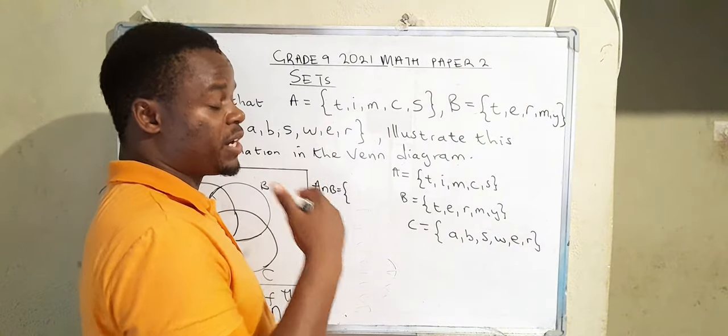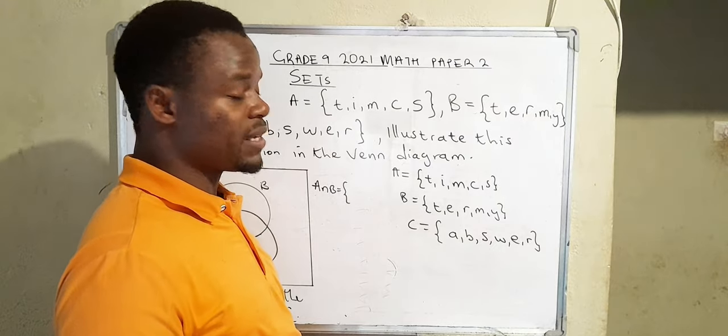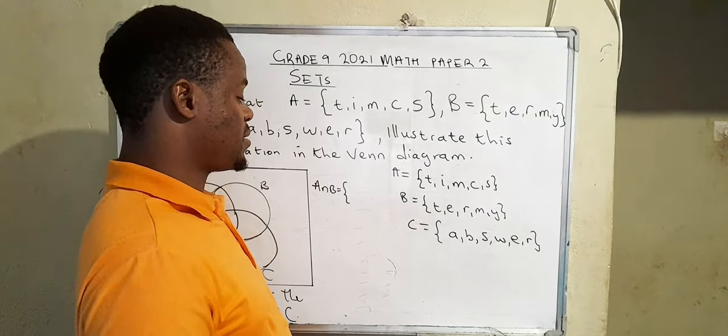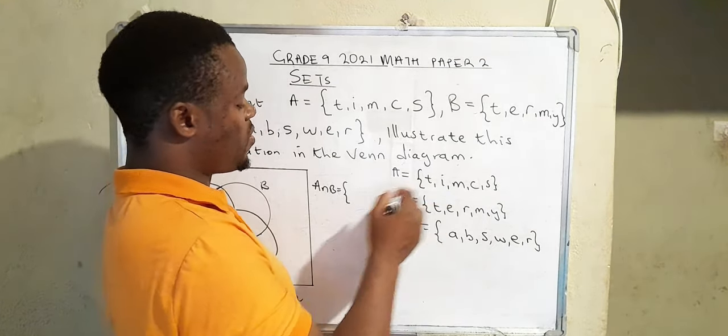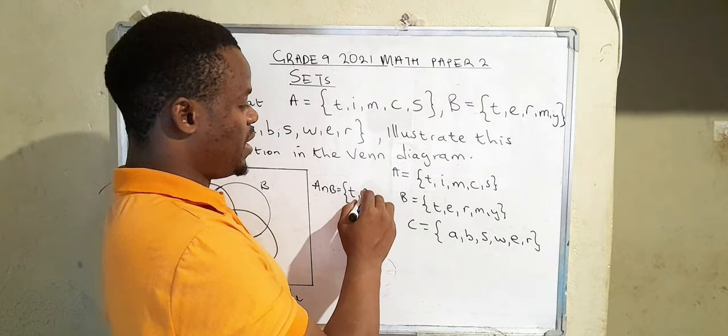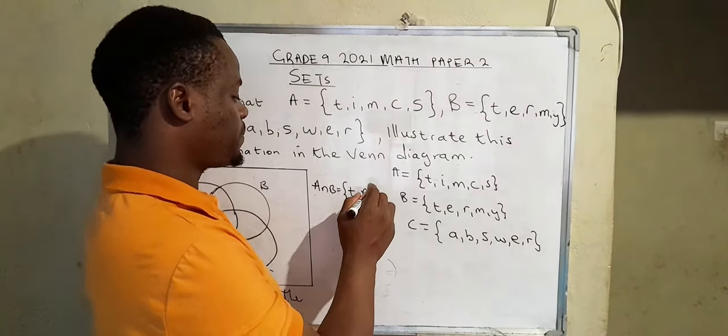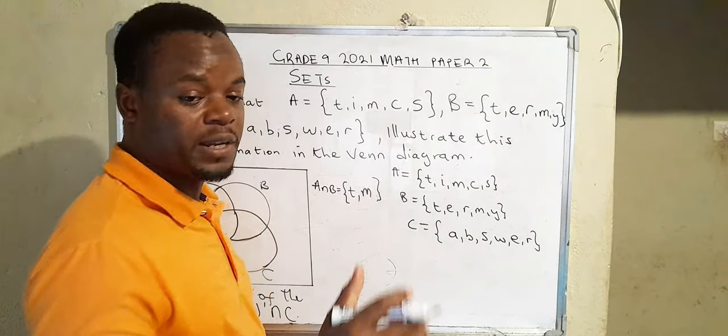The intersection set is simply a set of elements that are common in two given sets or three given sets. So what are the common elements here? We have a T, we have M. What else? That's all. So that is the intersection set of A∩B.